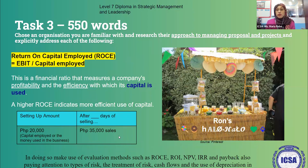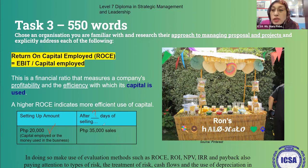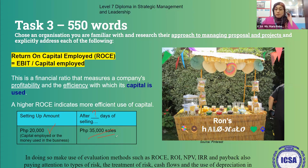The first metric is Return on Capital Employed (ROCE). ROCE is a financial metric used to calculate how much profitability and efficiency you get in return by employing your capital. For example, if I have a plan to set up a halo-halo business and my setup amount is 20,000 pesos, this is what we consider the capital employed. After some time, you can predict earnings of around 35,000 in sales and revenue.